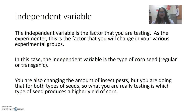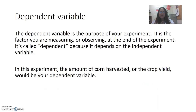Sometimes you are asked to identify the independent variable. The independent variable is the factor you're testing. In this case, it's the type of corn. We're testing whether the transgenic corn variety that produces its own pesticide will be resistant to the European corn borer and produce a higher yield. So our independent variable is the type of corn seed.